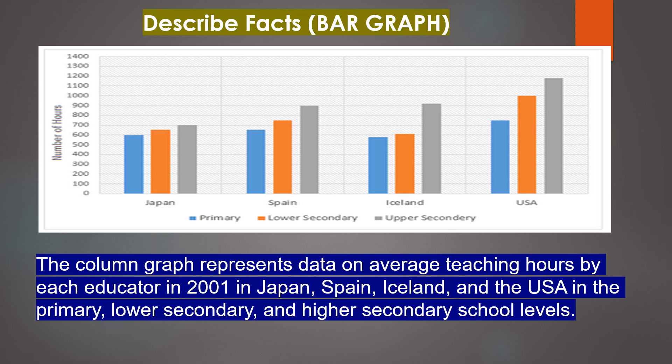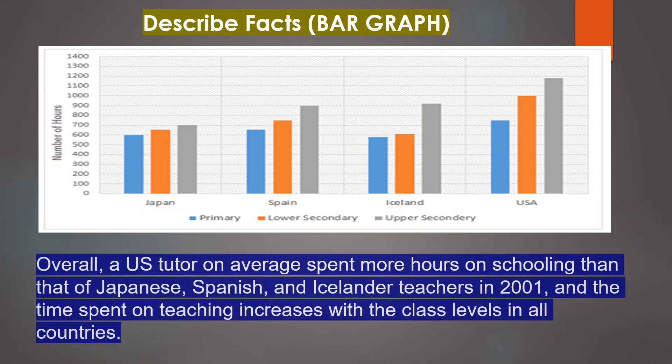The column graph represents data on average teaching hours by each educator in 2001 in Japan, Spain, Iceland and the USA in the primary, lower secondary and higher secondary school levels. Overall, a US tutor on average spent more hours on schooling than that of Japanese, Spanish and Icelander teachers in 2001, and the time spent on teaching increases across class levels in all countries.